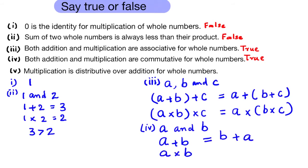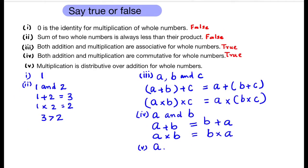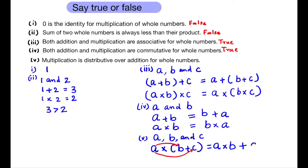And a multiplied by b is equal to b multiplied by a. Fifth question: Multiplication is distributive over addition for whole numbers. For any three whole numbers a, b, and c: a × (b + c) = a × b + a × c. So the statement is true.